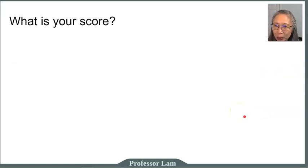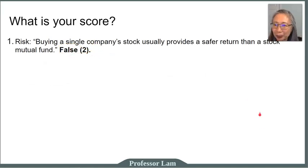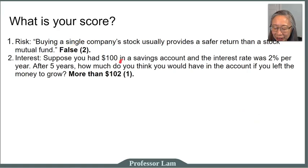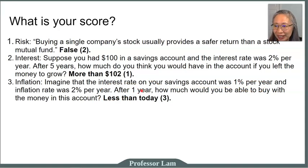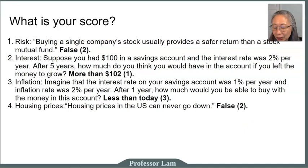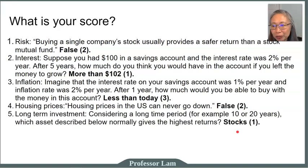Let's take a look at your score. Question one: the correct answer is false. Question two: the correct answer is more than $102. So if you put $100 in a savings account at a 2% per year interest rate, after five years you would have more than $102. Question three: the correct answer is less than today — option three. If your interest rate is only 1% but inflation is 2%, after one year you'll be able to buy less than you can today. Housing prices — the answer is false; housing prices can go down, it doesn't always go up. And for long-term investment, stocks will generate the highest return in the long run.